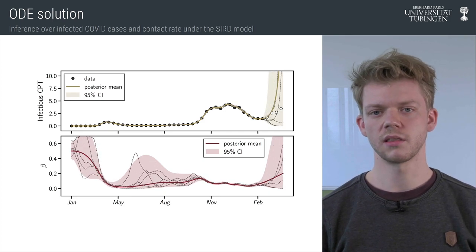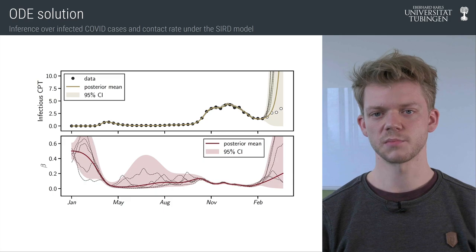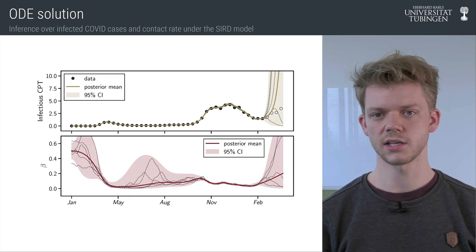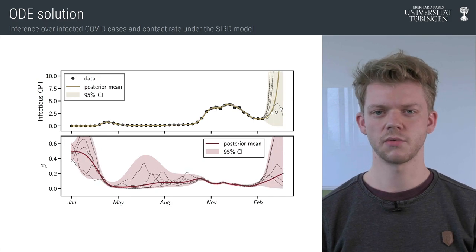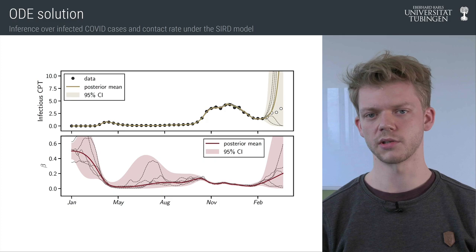On top you see the infectious case counts as obtained from the SIRD solution together with real data. When extrapolating on the right you see the uncertainty quickly increasing due to the multitude of possible outcomes.